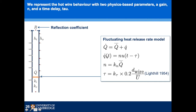Now we turn on the heater and look at the thermo-acoustic effect. We use a simple n-tau model: the heat release rate at time t equals N times the velocity at time t minus tau. It's the simplest model containing the relevant physics and is very commonly used in thermo-acoustics. Specifically, N = k_n × Q-bar (the mean heat release rate), and tau = k_tau × 0.2 × d_wire / u_bar — which is why we needed u_bar from the base flow model — following Lighthill's 1954 paper on heat release around a wire.